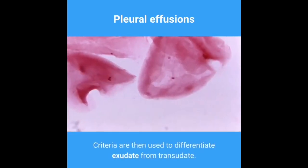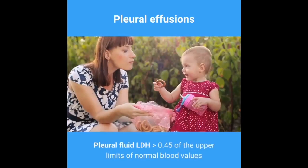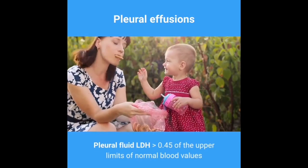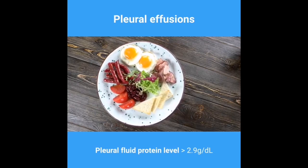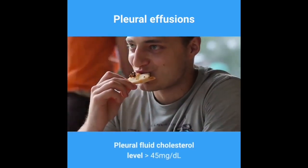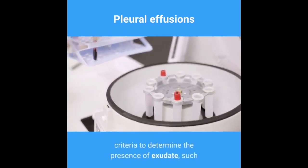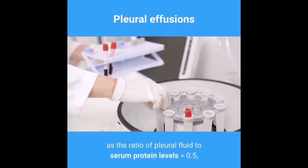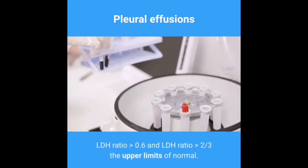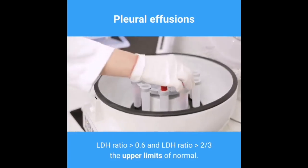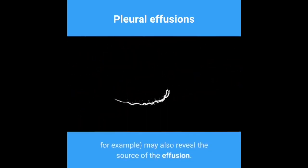Exudative effusions have the following characteristics: pleural fluid LDH greater than 0.45 of the upper limits of normal blood values; pleural fluid protein level greater than 2.9 grams per deciliter; and pleural fluid cholesterol level greater than 45 milligrams per deciliter. Other criteria include a ratio of pleural fluid to serum protein greater than 0.5, LDH ratio greater than 0.6, and LDH greater than two-thirds the upper limits of normal. Other pleural fluid analysis results, such as cytology or amylase, may also reveal the source of the effusion.